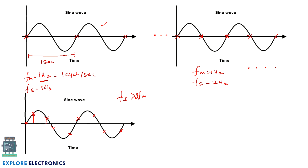This is my sampling point. These are the sampling points so that I am going to get different signals at different sampling periods, which will be easy for reconstruction. So the sampling theorem says FS should be greater than 2FM.